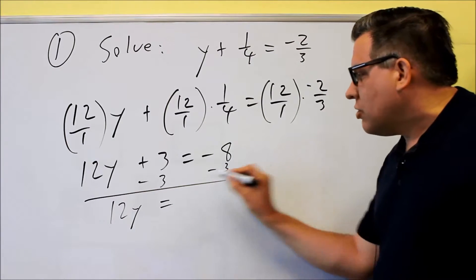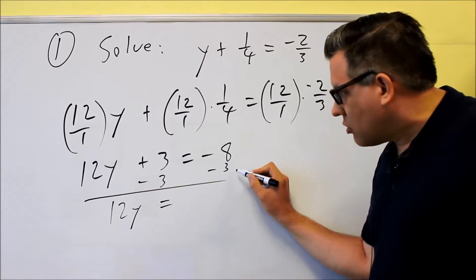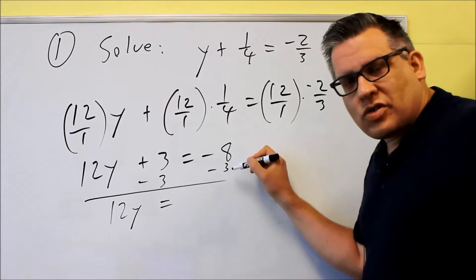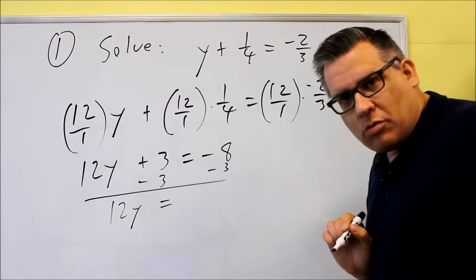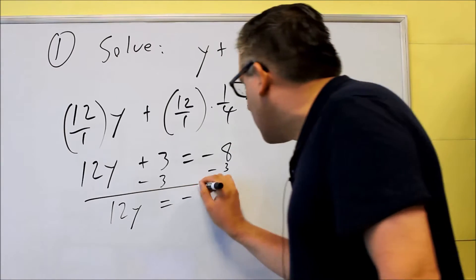When we subtract that, this should be zero. So 12y on that side, this is zero, and then -8, you're subtracting 3 more. So when you have two numbers with the same sign you're going to add them together and take the sign of both of them. 8 plus 3 is 11, there's two negatives, so I get -11 as a result.